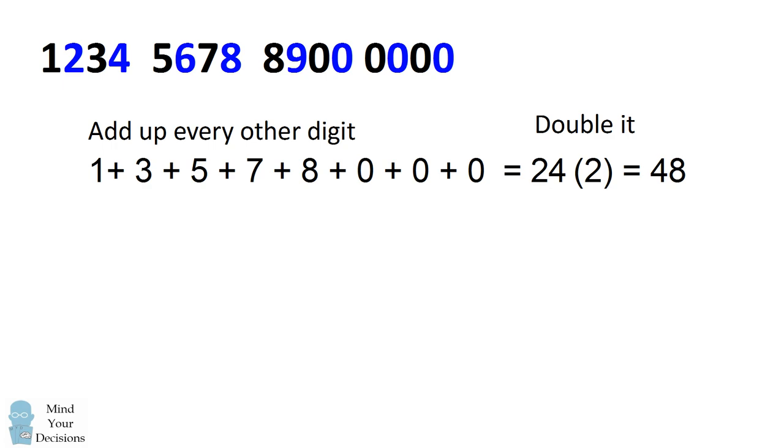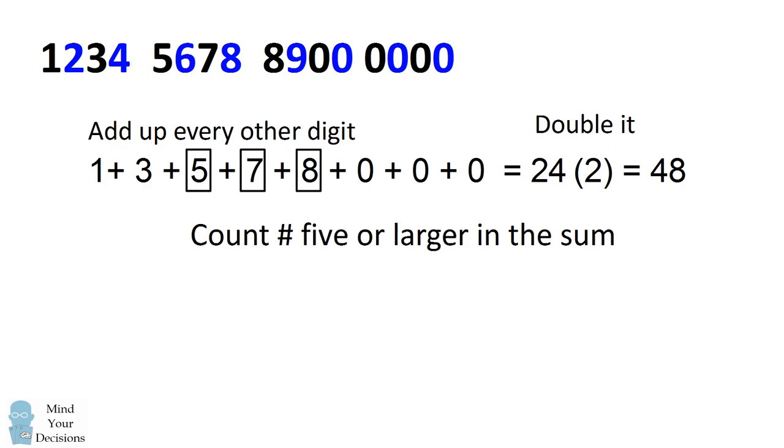Now look at the numbers which you've just added up. Count the number of digits which are 5 or larger. In this case, the numbers 5, 7, and 8 are 5 or larger, so that means there are 3 numbers which are 5 or larger.